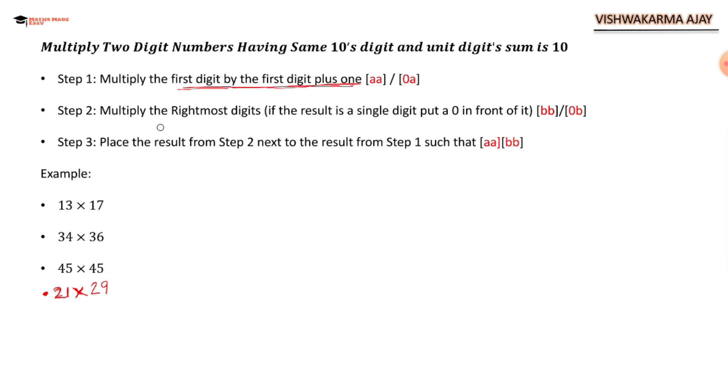Step number 2: Multiply the rightmost digits. If the result is a single digit, put 0 in front of it. This will only happen when the unit numbers are 1 and 9.